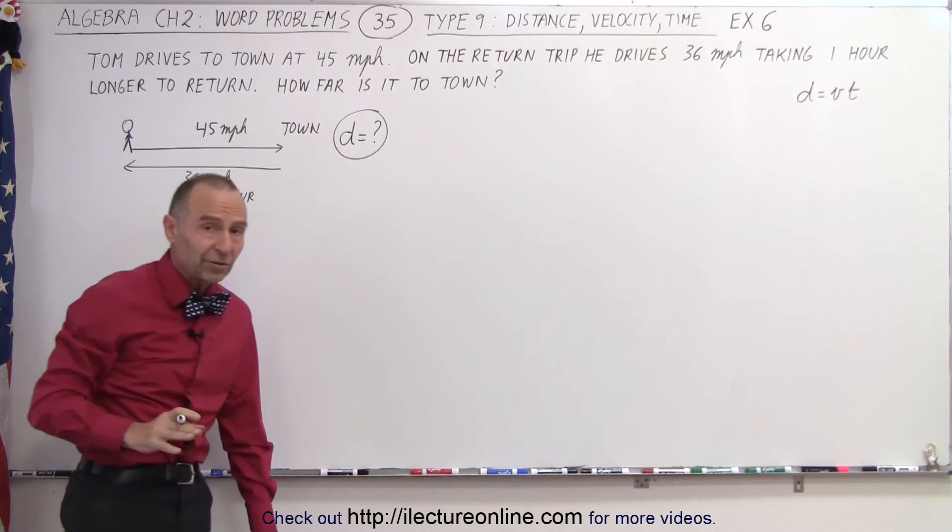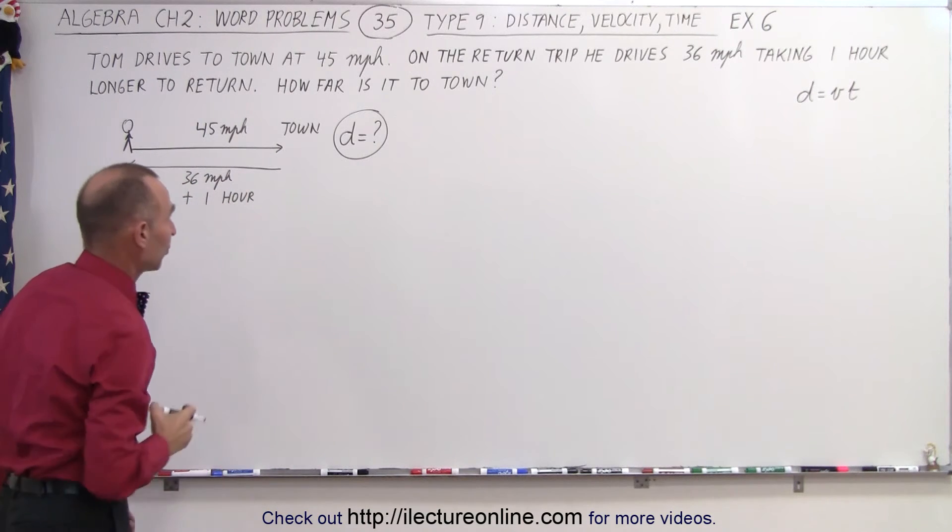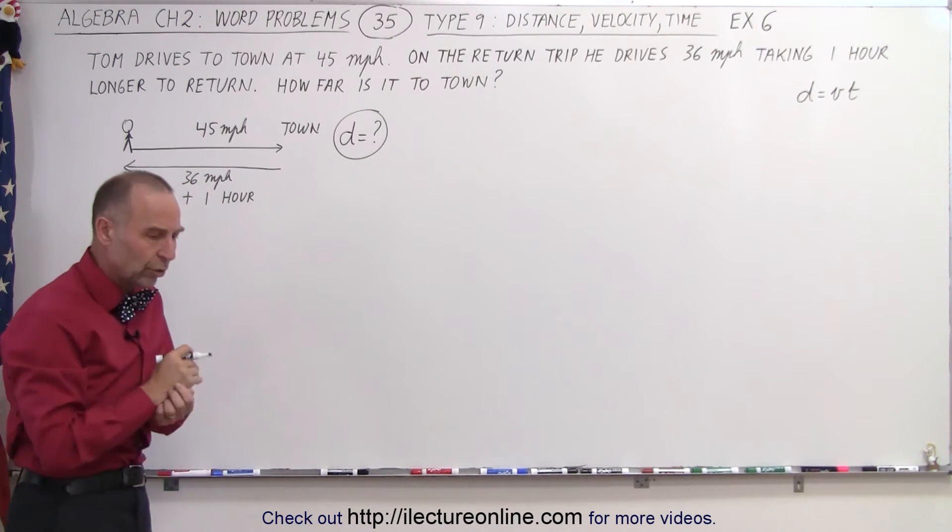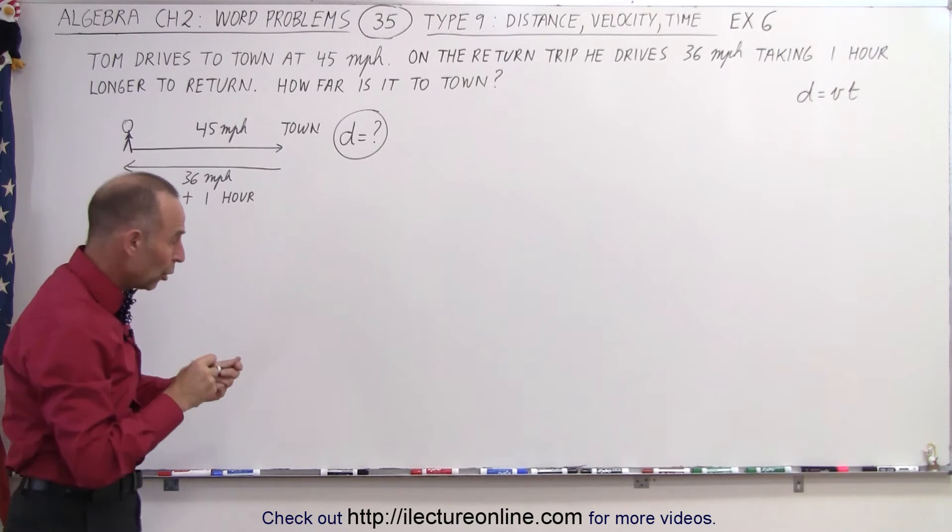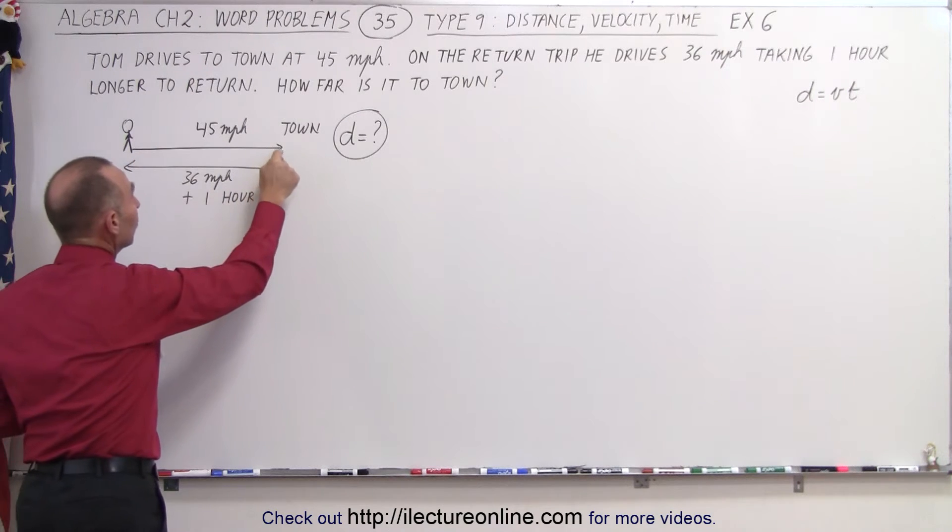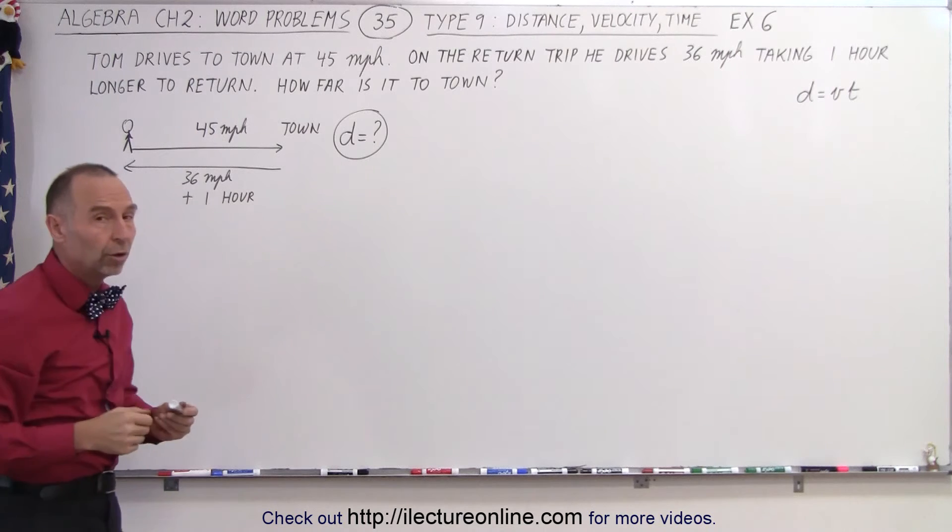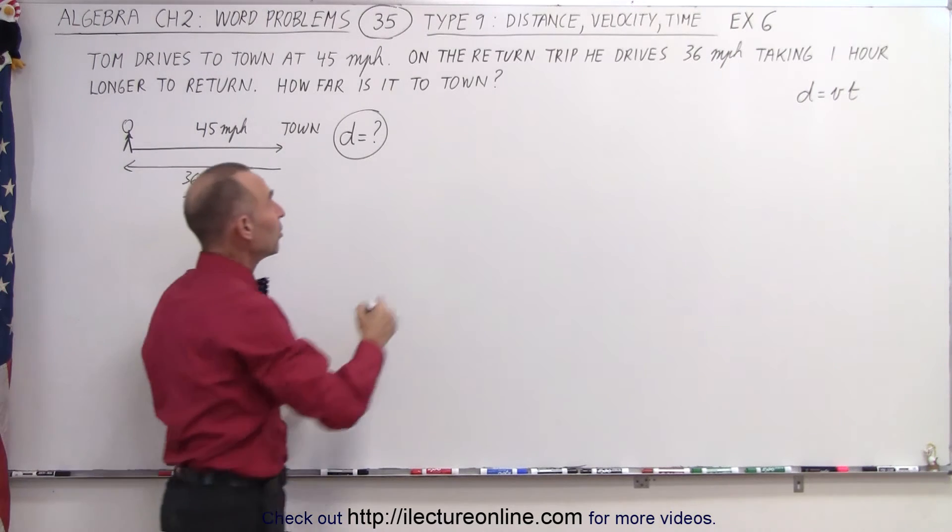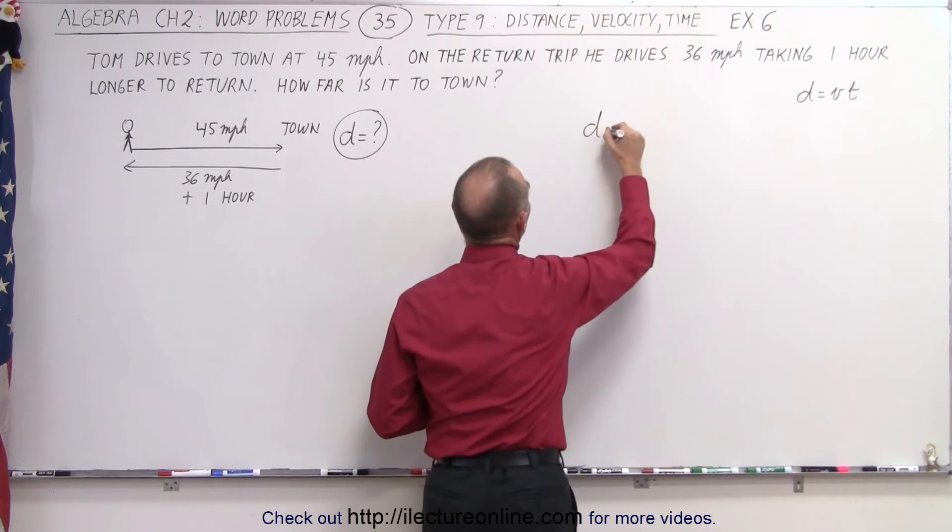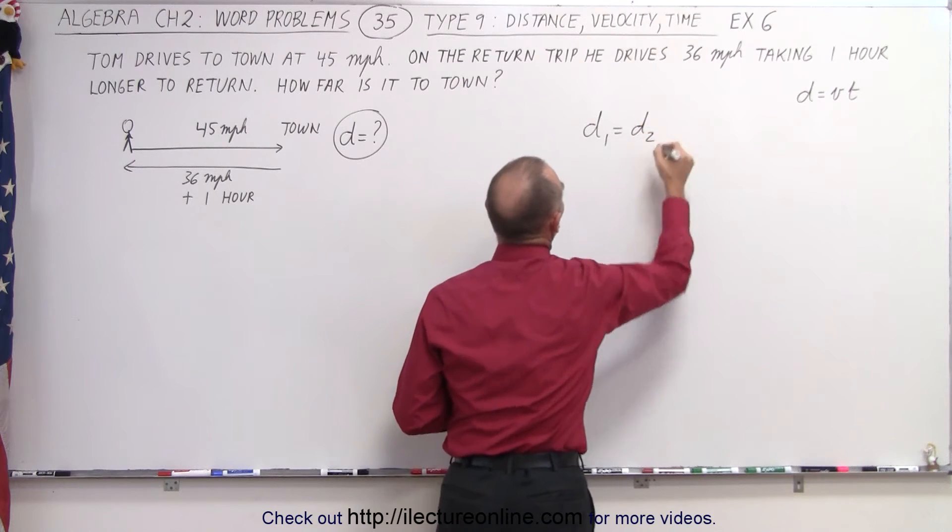So what we don't know here is how far it is to town. Matter of fact, that's what we're looking for. So we don't know the distance. And we do know that the distance to town is the same as the distance back home. So therefore, we can start with the equation d₁ = d₂.